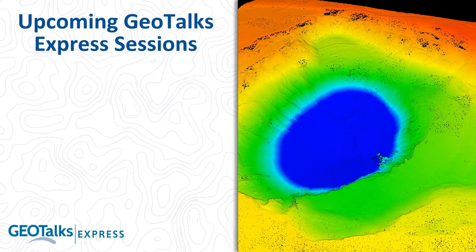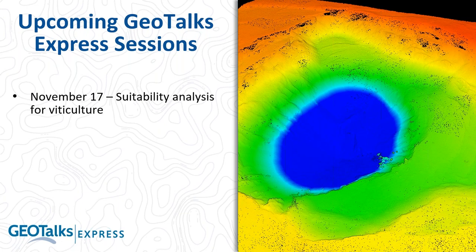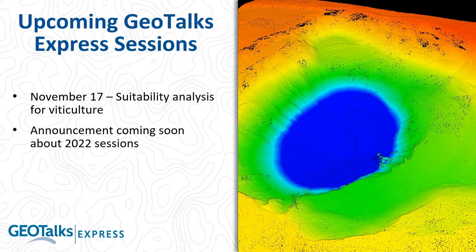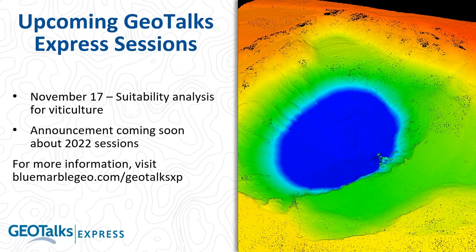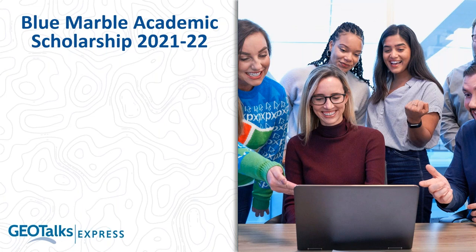Some upcoming events to remind you of. We are getting close to the end of the year and have one more Geotalks Express session scheduled for a week from today. This is a case study based on an article written recently on the use of Global Mapper for viticulture suitability — analyzing various components of an area to determine whether a vineyard can be set up in that location. We have already outlined our sessions for the 2022 season starting right after the new year.